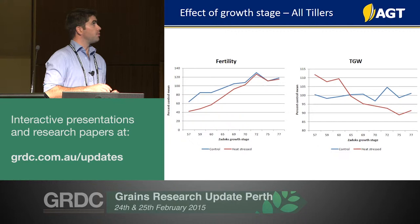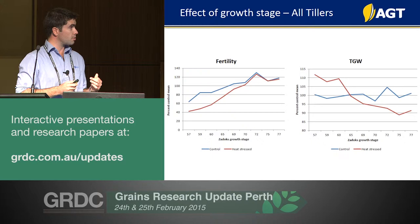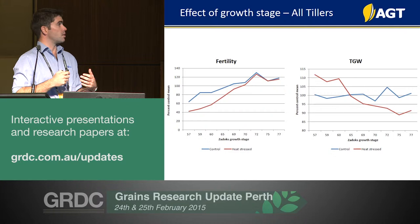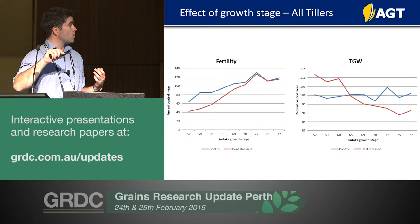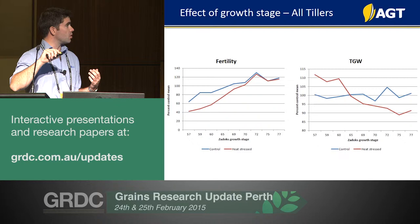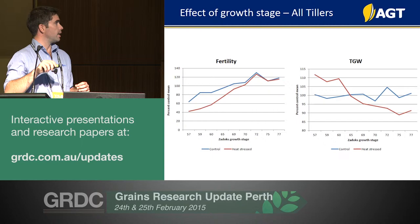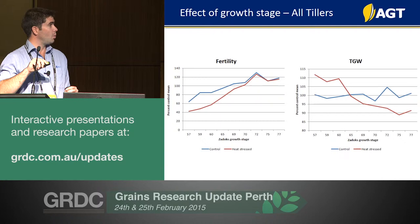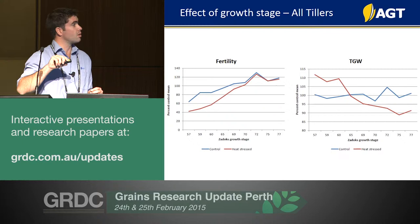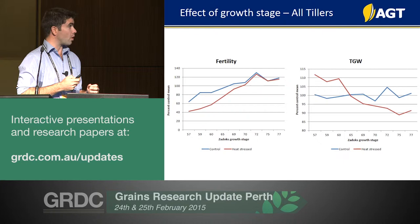The effect of growth stage on the extent of damage is important. With fertility, the big issue is the effect of heat stress on pollen viability. During head emergence and into early to mid-flowering, the number of grains per spikelet is significantly decreased compared to the control. Conversely, with 1,000 grain weight, when fewer grains are set due to effects on pollen viability, those remaining grains are very large. But later on, when all grains are set and a heat stress event occurs, we see a real reduction in grain fill duration and an increase in small grain screenings.